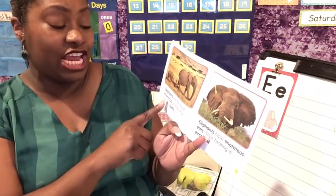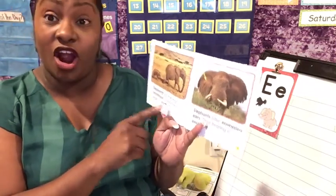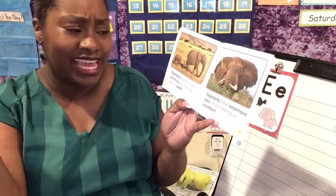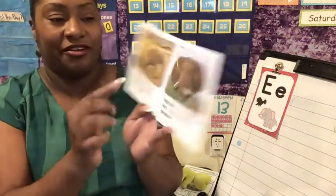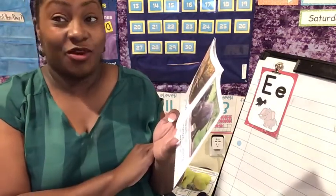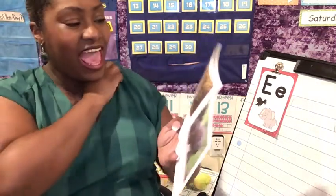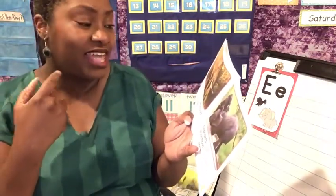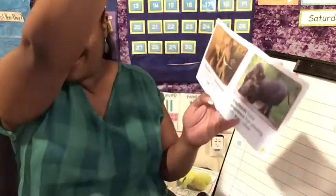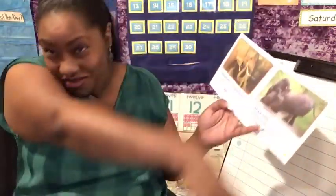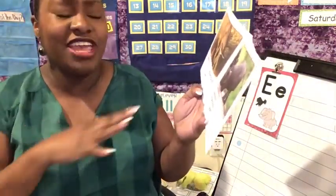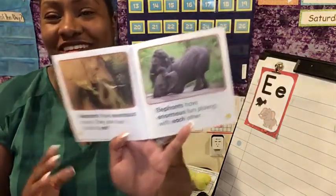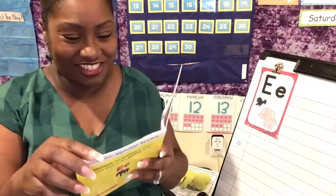Elephants are the most enormous animals that walk on earth. Elephants have enormous ears. Their hearing is excellent. Look at those big giant ears there. Giant is another word for enormous, which is another word for big. Elephants have enormous trunks. They use their trunks to eat. Can you pretend you have an elephant trunk? Elephants have enormous fun playing with each other.